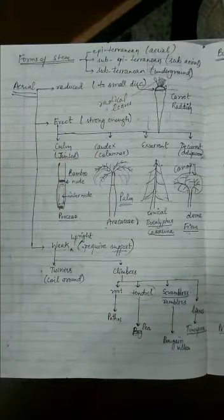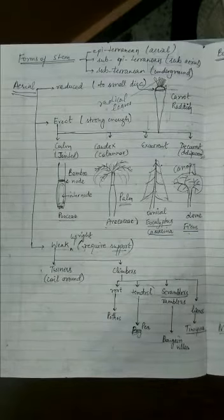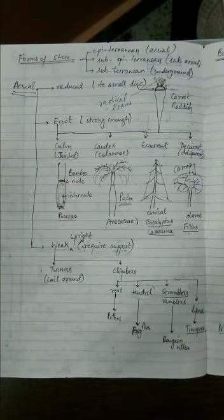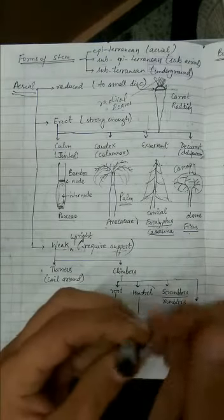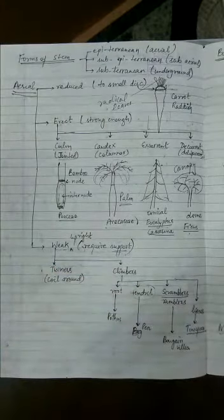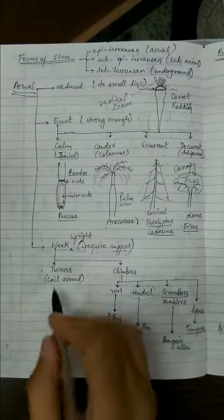The next category of aerial stems is weak stems. These stems are upright but not strong enough to stand on their own, so they need some external support to stand straight. The types are twiners and climbers. Twiners are plants which coil around a structure, either in a clockwise or anti-clockwise manner, without developing any special structure.